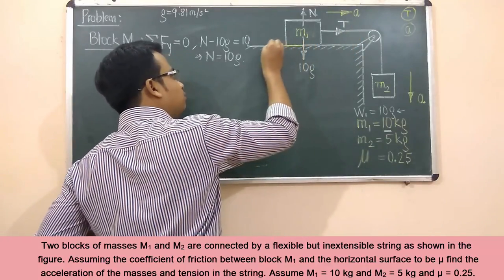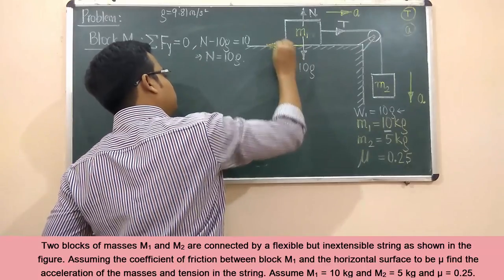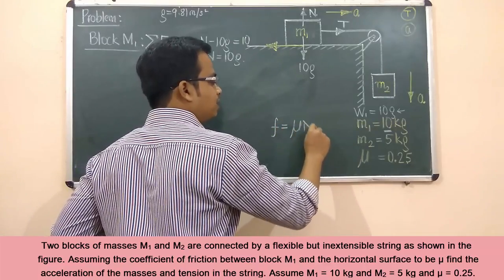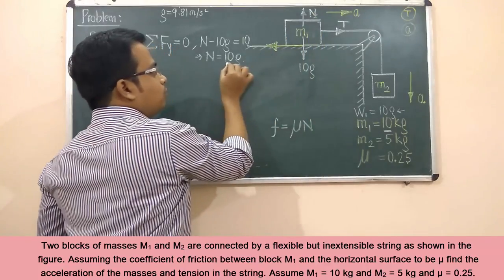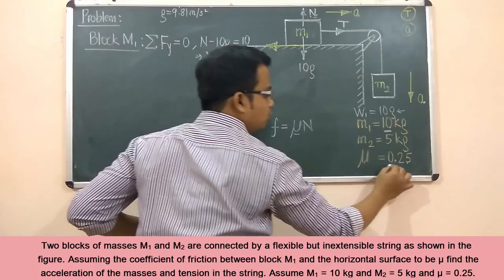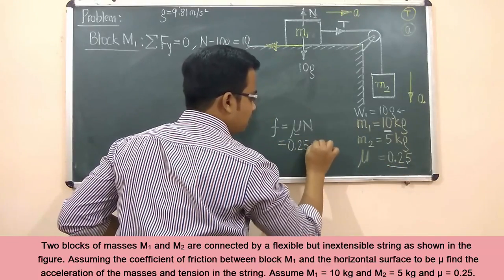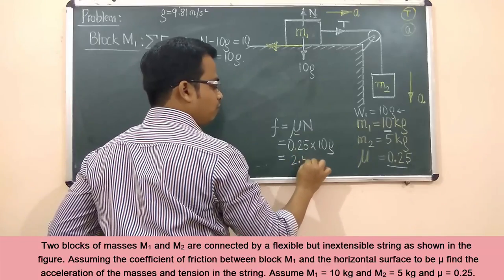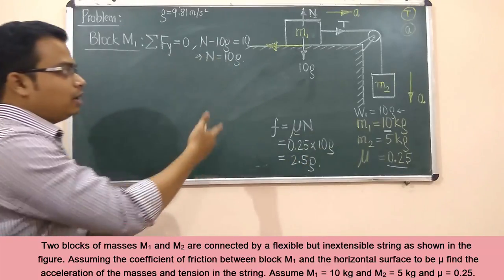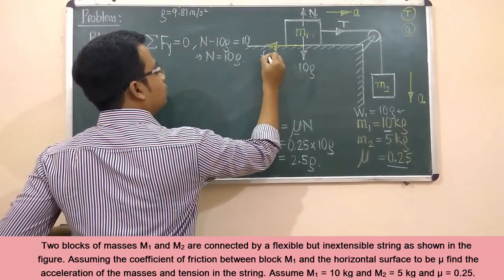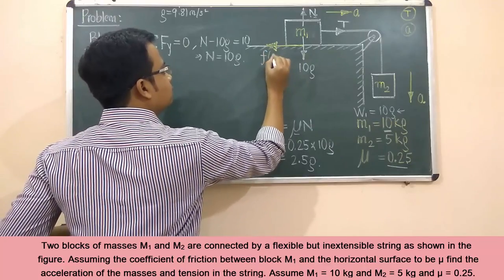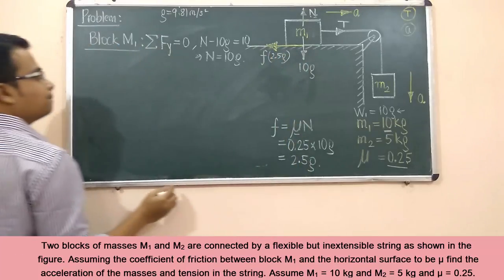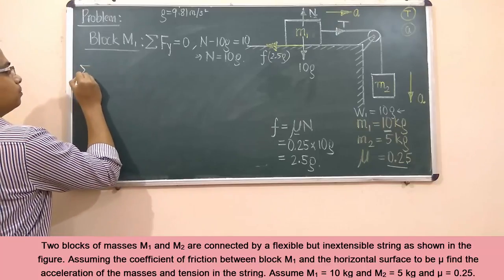Since block m1 is moving to the right, the friction force acts in the leftward direction. The friction force f equals the coefficient of friction multiplied by the normal reaction: f = μN = 0.25 × 10g = 2.5g. So the friction force equals 2.5g acting towards the left.